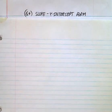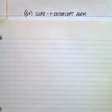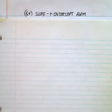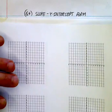Alrighty, here we go. So ladies and gentlemen, if you're watching this video, it means you're probably trying to figure out what's going on. So this is section 6.4. I'm going to look at what we call the slope y-intercept form of a linear equation.